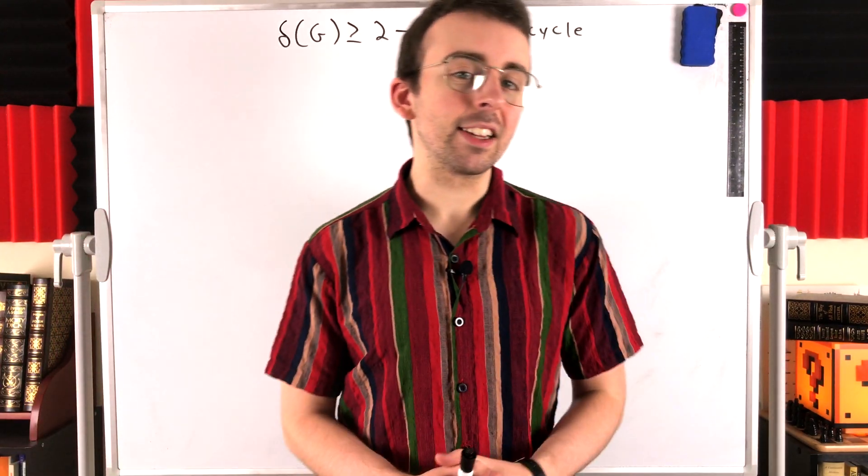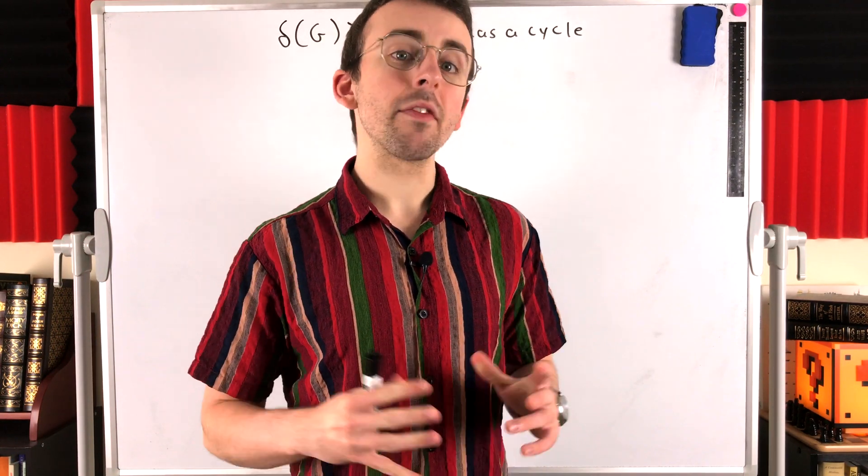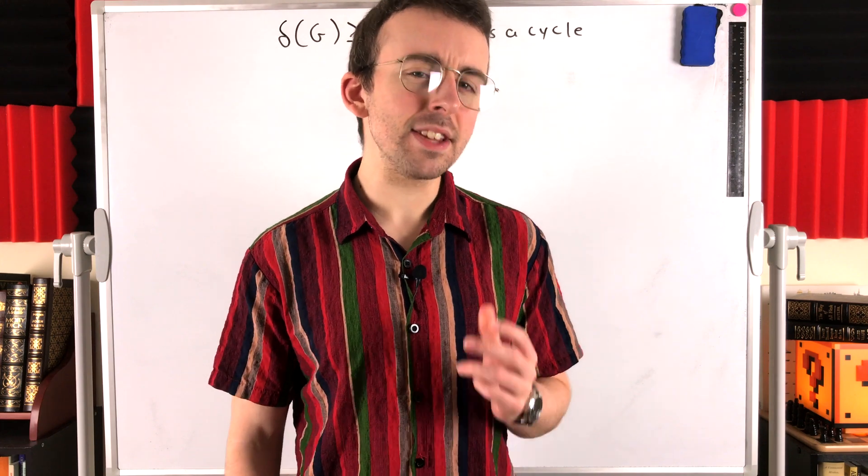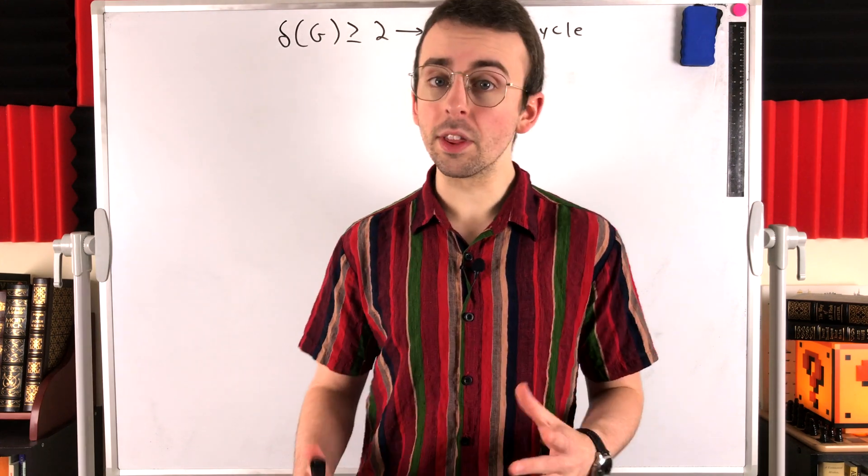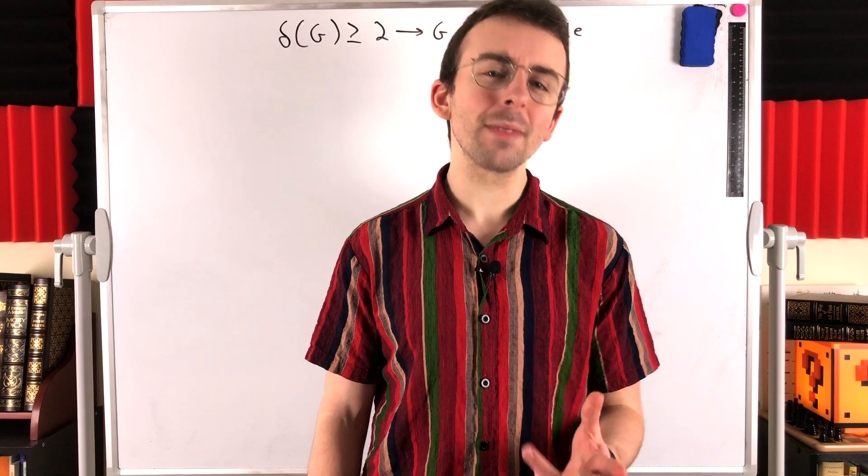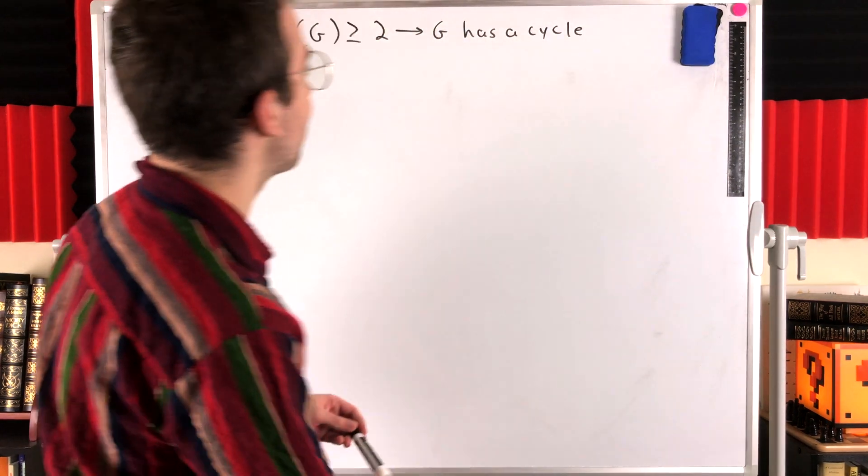Howdy folks. How big does the minimum degree of a graph have to be to guarantee the existence of a cycle within the graph? Turns out, not very big.